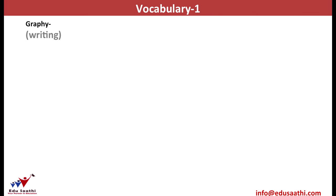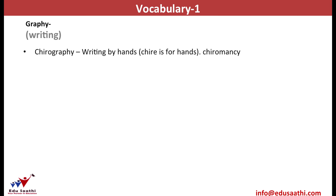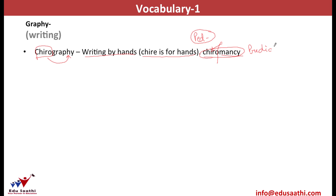Graphy means writing or to write. Thus, any word that ends in -graphy has something to do with writing. For example, chirography — chire means the hand, so chirography is the writing by hands. We know about the people who read the lines on the hands and predict your future — this practice is known as chiromancy. If I break this word, I get chiro (the hand) and -mancy (which means prediction). So chiromancy is the prediction by reading the hands.